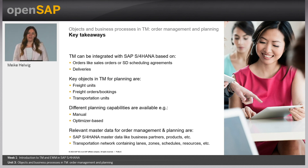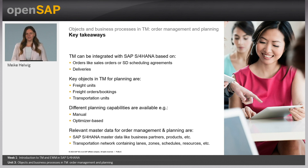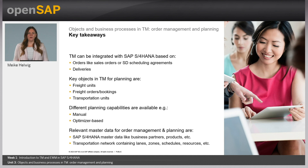We're coming to the end of this session. I want to summarize what you learned. We talked about order management — we can integrate with S/4HANA core based on sales order or purchase order for more long-term planning. We can also integrate based on deliveries, which you know already from eLeTra, which is more execution-driven and short-term. The starting objects in TM are the freight units used for planning purposes, and the result documents like freight orders, freight bookings, and transportation units — which we'll talk more about in the next session. You have different capabilities to plan in TM, like manual planning or an optimizer. And importantly, you need master data — master data from your S/4HANA system, and the transportation network which consists of lanes, schedules, and so on — to have a foundation for the planning.